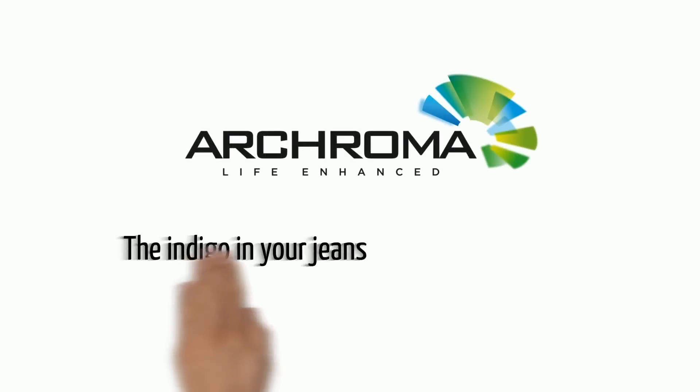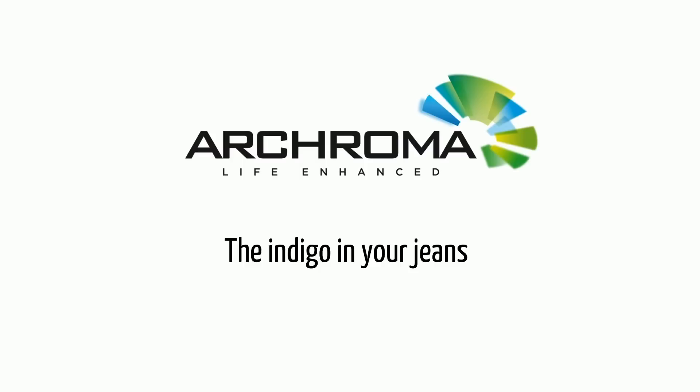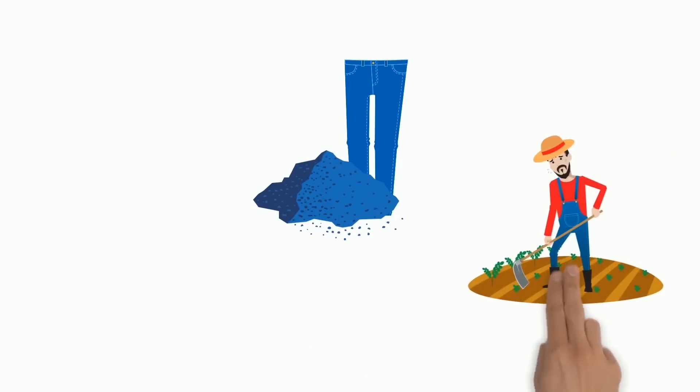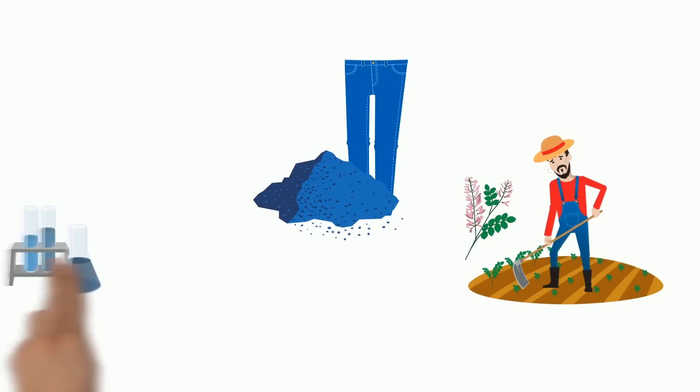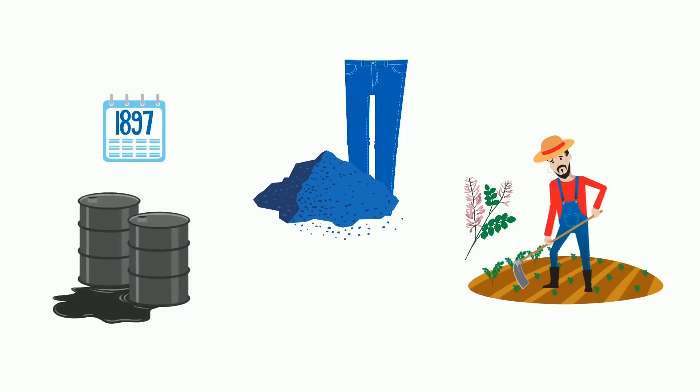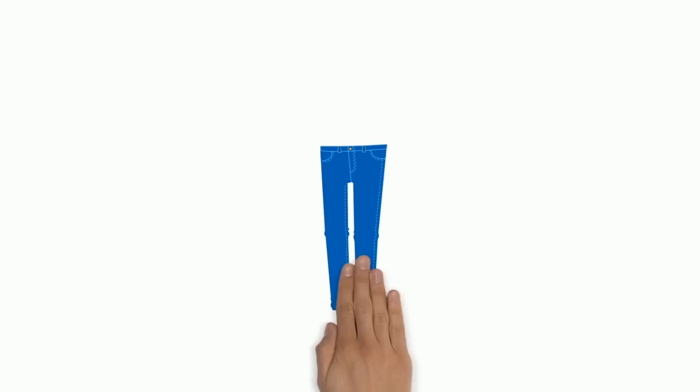Archroma presents: The Indigo in Your Jeans. The blue dye in your jeans is called indigo, a pigment that used to be extracted from plants. Due to inefficiencies in plant extraction and advances in organic chemistry, indigo was first commercially synthesized in 1897 from coal tar. Current manufacture is still based on similar chemistry.